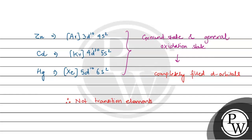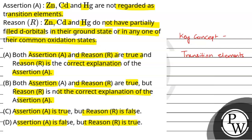Coming back to the question: assertion — zinc, cadmium, and mercury are not regarded as transition elements — is correct. The reason that they do not have partially filled d-orbitals in their ground state or in any of their common oxidation states is also true, and it is the correct explanation. So option A is correct: both assertion and reason are true, and reason is the correct explanation of assertion.